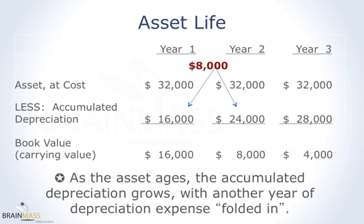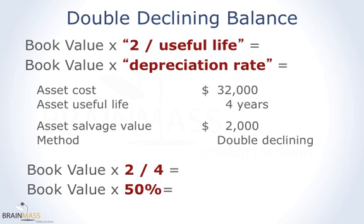In year one the expense was $16,000, but in year two it was half that — $8,000 — as shown by the accumulated depreciation growing by only $8,000 from year one to year two. There are two ways to view the double declining balance formula. The first is: book value times two over the useful life, which is the simplest. Many textbooks use the second form: book value times the depreciation rate, where the depreciation rate equals two divided by useful life — usually expressed as a percent — but converting to a percent is not necessary to get the correct dollar amount.